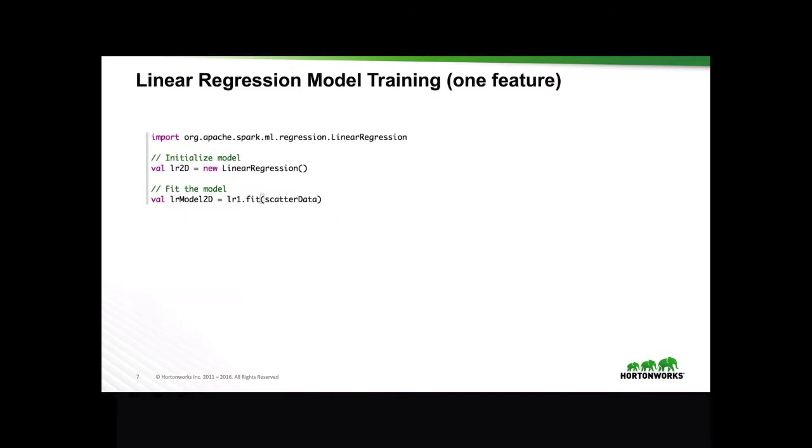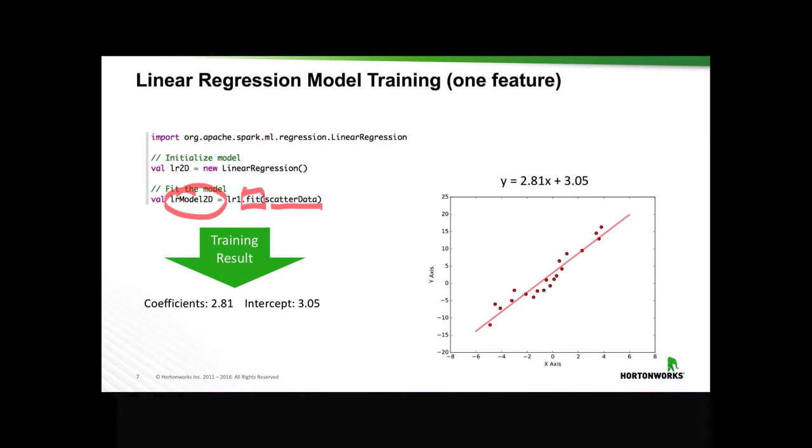Once we initialize our model, we can apply a fit function on our scatter data data frame to get the model results with the following coefficient and intercept, which then can be visualized as a line among our data points.